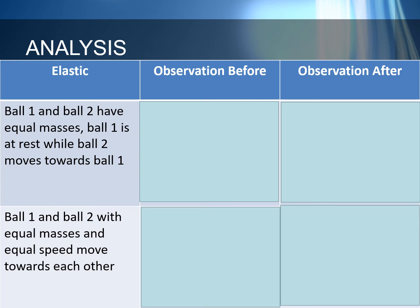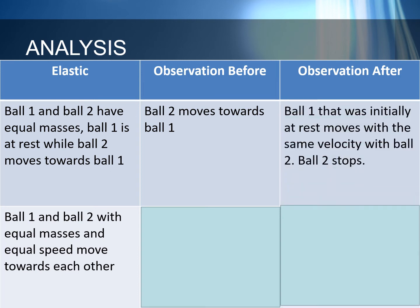Be sure that you are through with Learning Task 3.8 before proceeding to this part of the video. Now let us check your answers. For setup 1, ball 1 and ball 2 have equal masses. Ball 1 is at rest while ball 2 moves towards ball 1. Before collision, ball 2 moves towards ball 1. After collision, ball 1 that was initially at rest moves with a velocity the same as ball 2, while ball 2 stops.